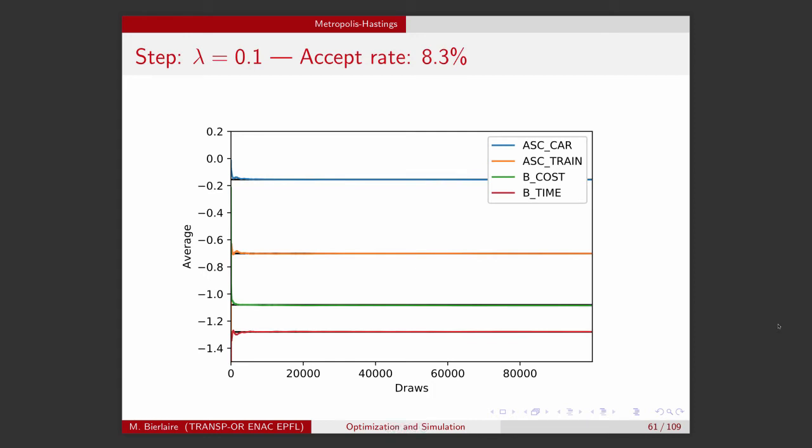So with various values of lambda. So this is the one for lambda equals 0.1. We have an accept rate of 8.3%. Again, it goes very well.